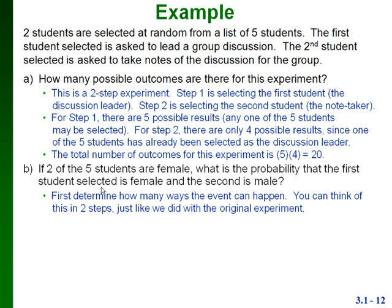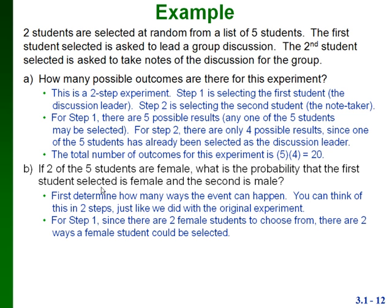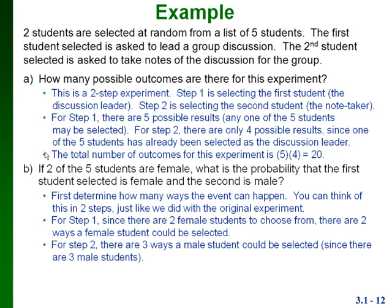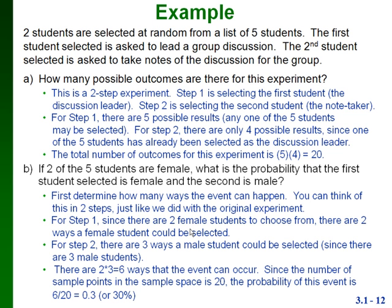For the first step of our experiment, we're selecting a female. There are two ways to do that because there are two female students in the group. For the second step, we want to select a male. If there are two female students, that means there are three males. We still have three males left to choose from for step two, so there are three ways to do that. Our total number of ways to get the first student female and the second student male is two times three, which is six.